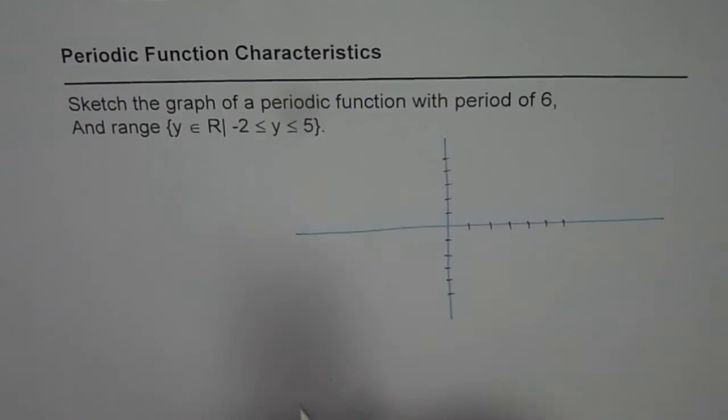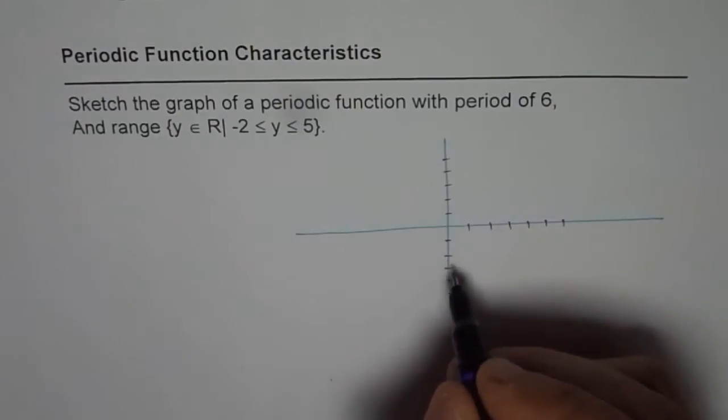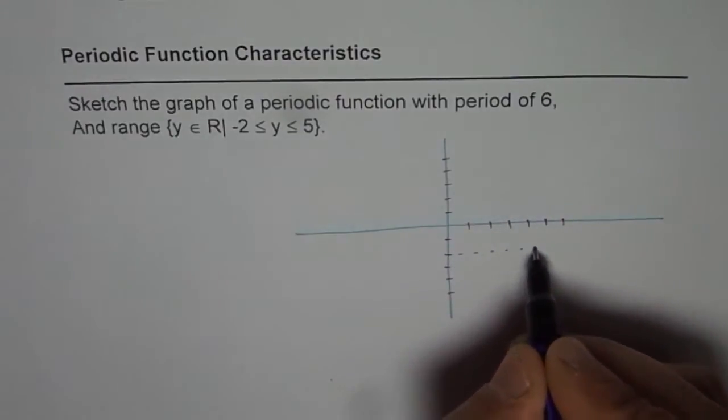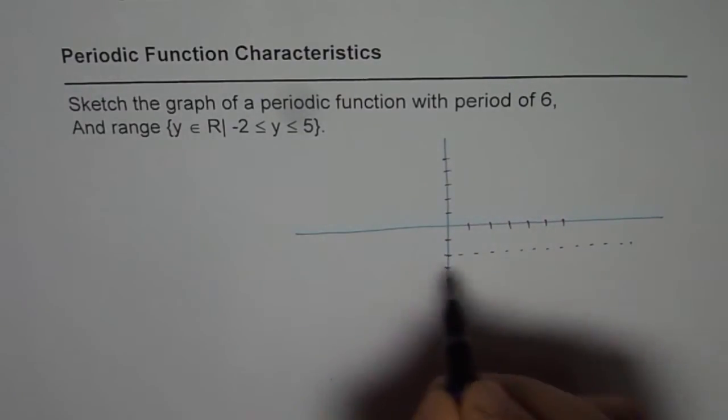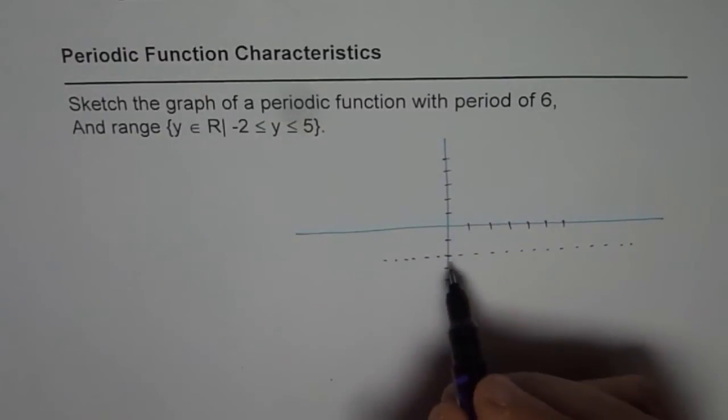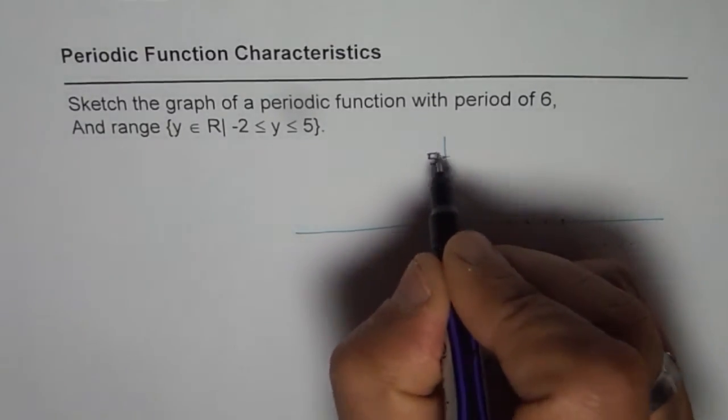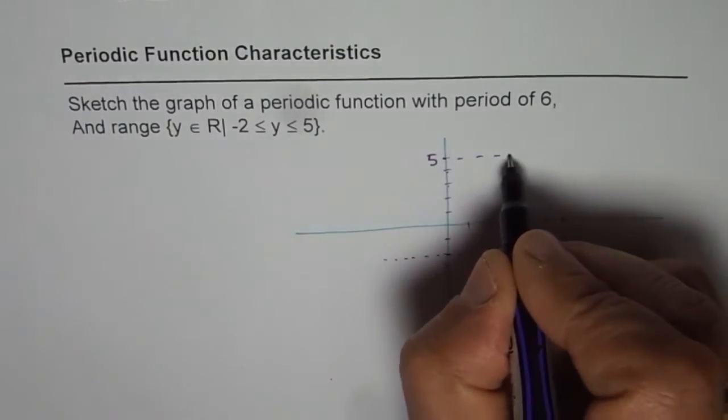So when we say that the range is from -2 to 5, that means minimum will be on this line. So just sketch a dotted line here. Minimum will be on this line, right, and maximum should be at 5: 1, 2, 3, 4, 5. So this is 5 for us, so the maximum is somewhere here.